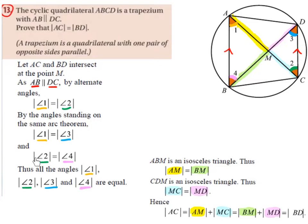Angle 2 must be equal to angle 4. So angle 2, drawn in green, must be equal to angle 4, drawn in pink. Taking the arc at the top AD, angle 4 and angle 2 are both standing on the same arc, so they must also be equal.